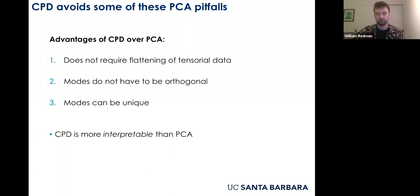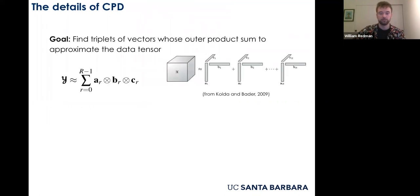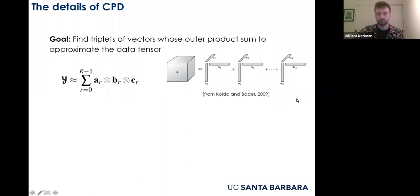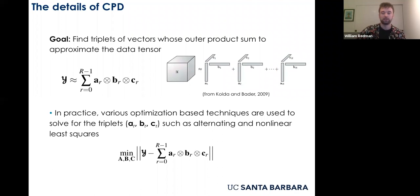To give details about CP decomposition: the goal is, given a tensor Y, to find triplets of vectors a, b, and c such that when you take their outer product and sum over all triplets, you get a good reconstruction of Y. This is shown schematically. If you're interested in CP decomposition, the place everyone starts is the really nice review by Kolda and Bader, which makes the scattered literature much more digestible.